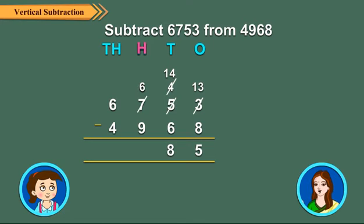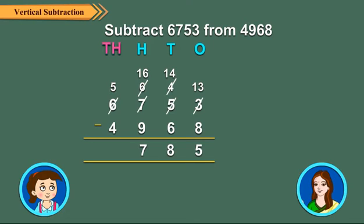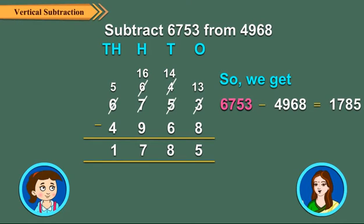Subtracting the 100's. Here, 9 is greater than 6. So, from the 1000's column we borrow 1000, leaving behind 5 thousands. Now, 1000 plus 6 100's is equal to 10 100's plus 6 100's, which is equal to 16 100's. So, 16 100's minus 9 100's is equal to 7 100's. Subtracting the 1000's: 5000's minus 4000's is equal to 1000. So, we get 6753 minus 4968 is equal to 1785.